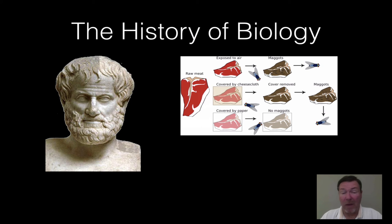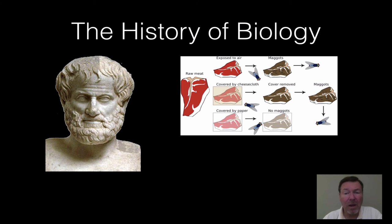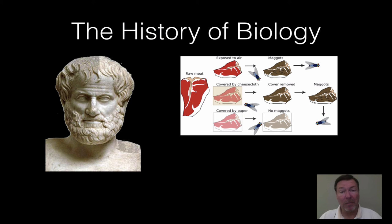Real quickly — I don't even have a year for it, many many years ago, I don't know how many thousand BC — this gentleman right here, Aristotle, was a Greek philosopher. He had a lot of ideas on biology and science in general, and it turns out he was wrong on most of them. But for the time, he was the one who made the decisions and taught the world about biology — he brought science to the common man.